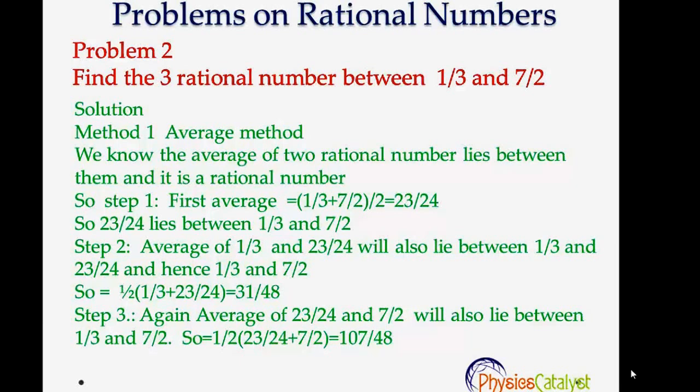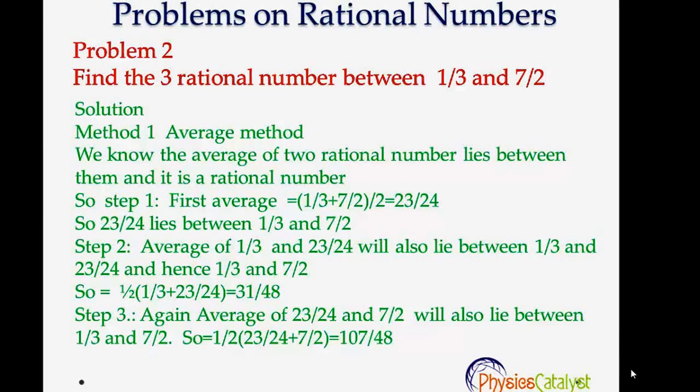We know that the average of two rational numbers lies between them and is a rational number. So the first average would be 23/24. So 23/24 lies between 1/3 and 7/2.